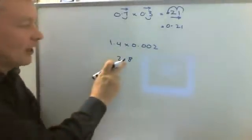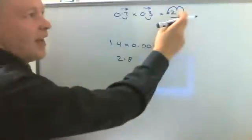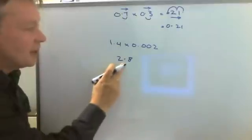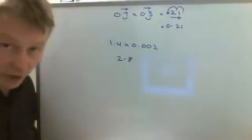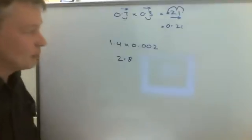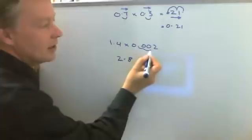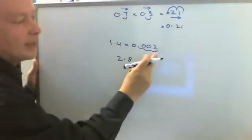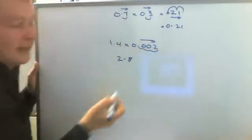Now my decimal point has already been allocated a place. It's not at the end as it was with those, it's already here because I just looked at 1.4 multiplied by 2. So my decimal point has actually moved 1, 2, 3 places and it's 3 places towards the right.